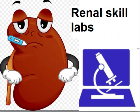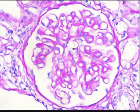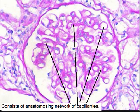Now we are doing renal skill labs — the kidney diseases which can be seen under the microscope. First of all, we should try to understand what is the structure of the glomerulus, because the glomerulus is the main structure. It is composed of tufts of capillaries, an anastomosing network of capillaries, as you can see in this photograph.